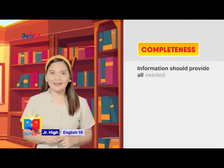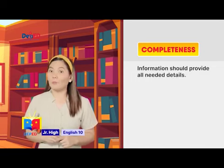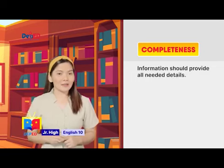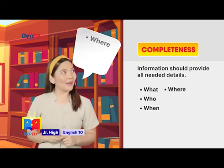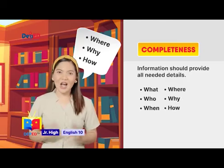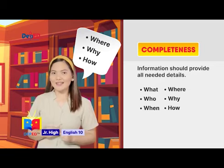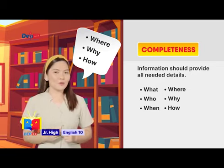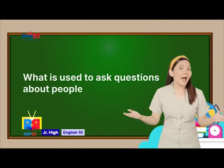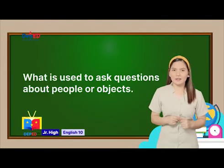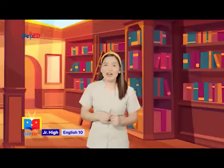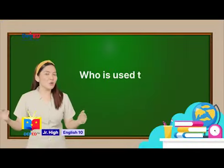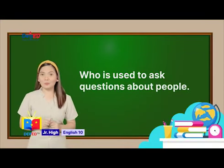Information should provide all needed details. It should be able to answer the WH questions such as what, who, when, where, why, and how. What is used to ask questions about people or objects — like, what academic subject excites you? Who is used to ask questions about people — for example, who is the first president of the Philippines?